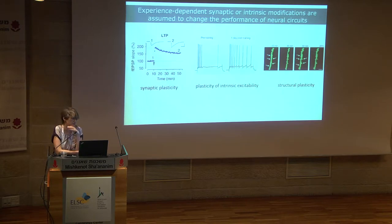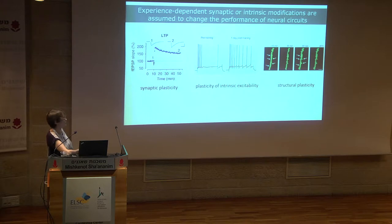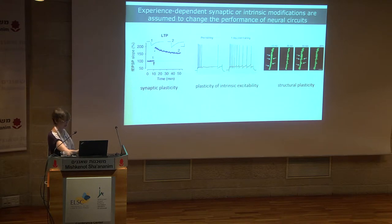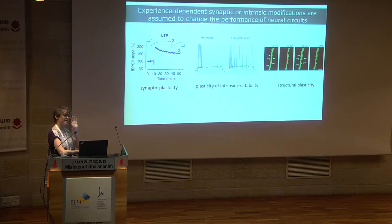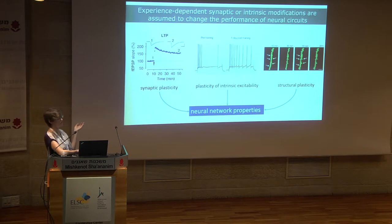During the last 50 years there has been an enormous amount of information learned about mechanisms underlying plasticity of neurons and synapses. We know about long-term potentiation and long-term depression, plasticity of ion channels and intrinsic excitability, and structural plasticity. The underlying assumption in all these beautiful papers is that these changes actually affect the behavior of neural circuits — and the question is whether that is really true.